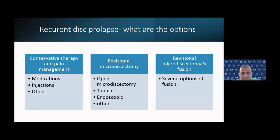It can be done standard mini open with a micro technique or with the use of a tube, or with the use of an endoscope or other things that people are used to in their own departments. Effectively, it'll be a redo of the first micro approach. A third option is to do the redo microdiscectomy but also supplement that with a fusion. When we talk about a segmental fusion, there's way too many options to go through in detail, but effectively the concept of fusion will be the extra factor.